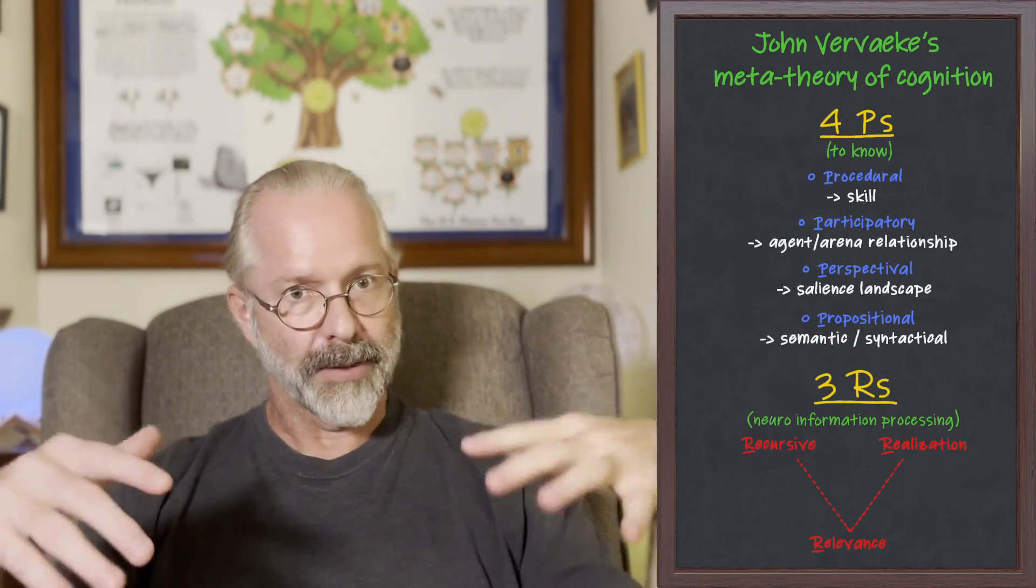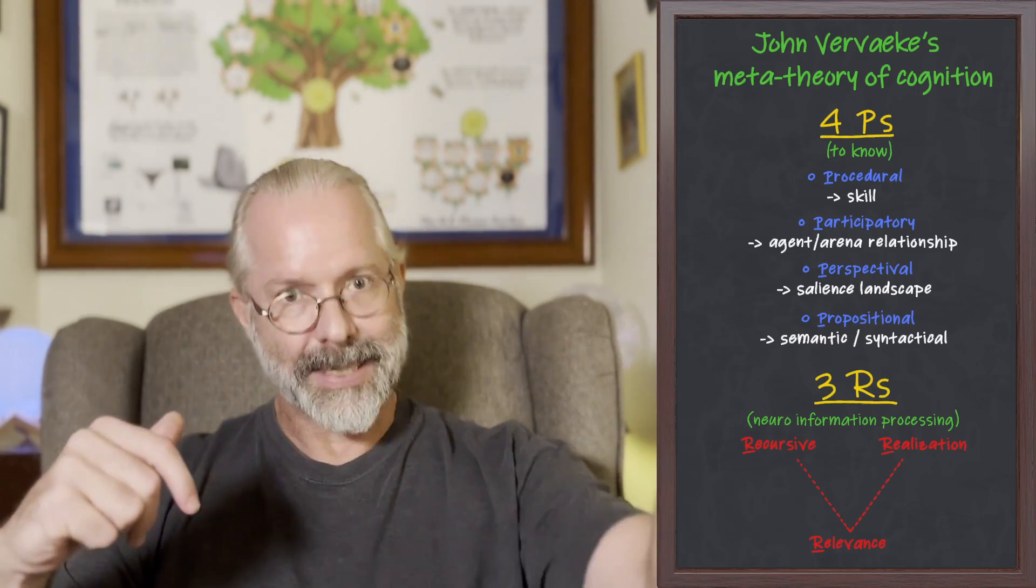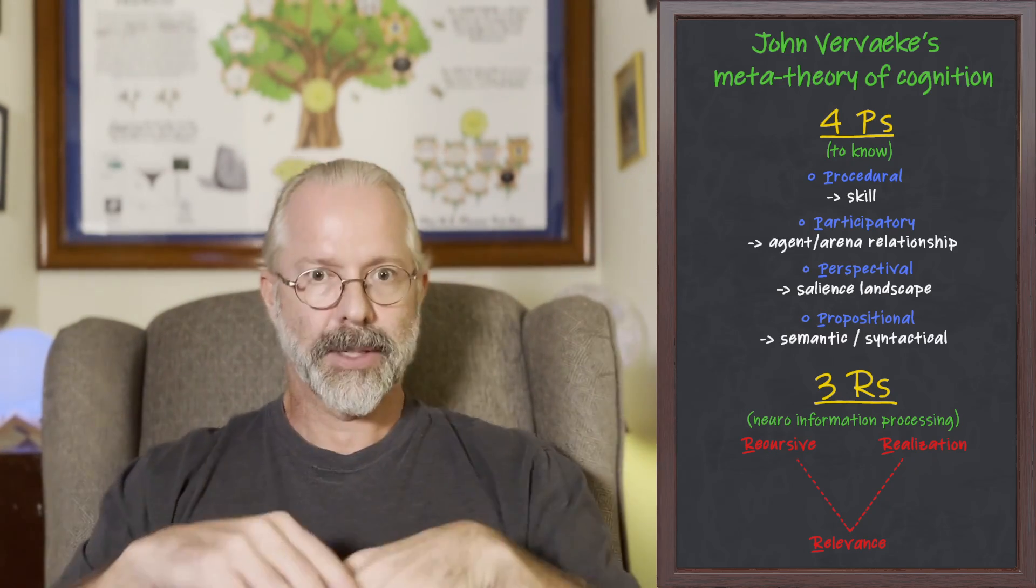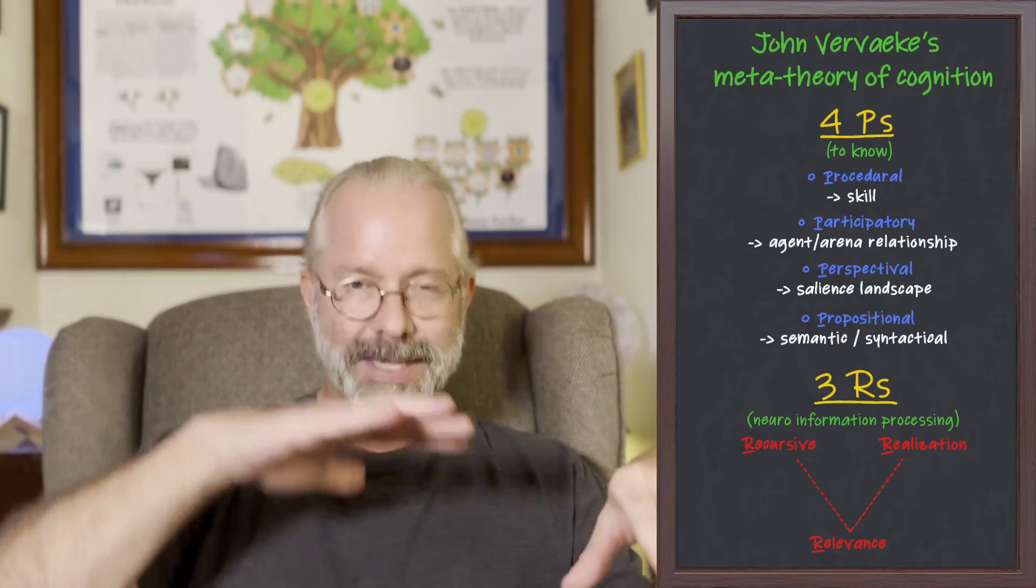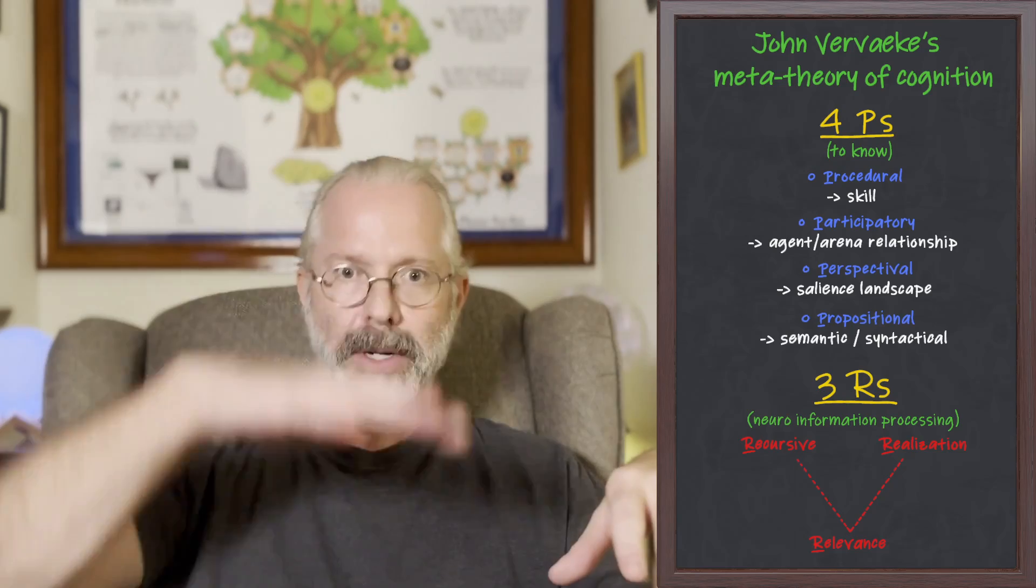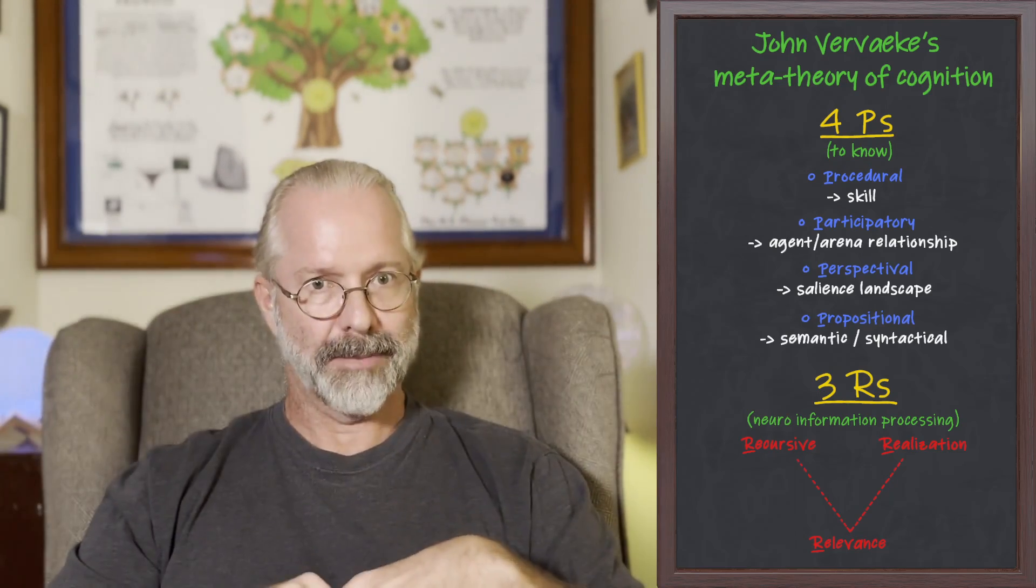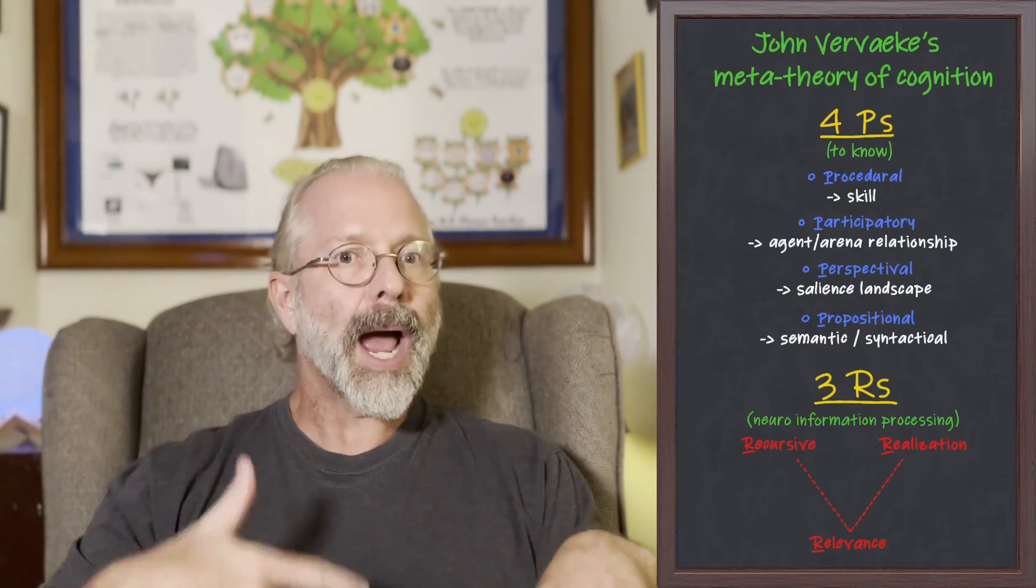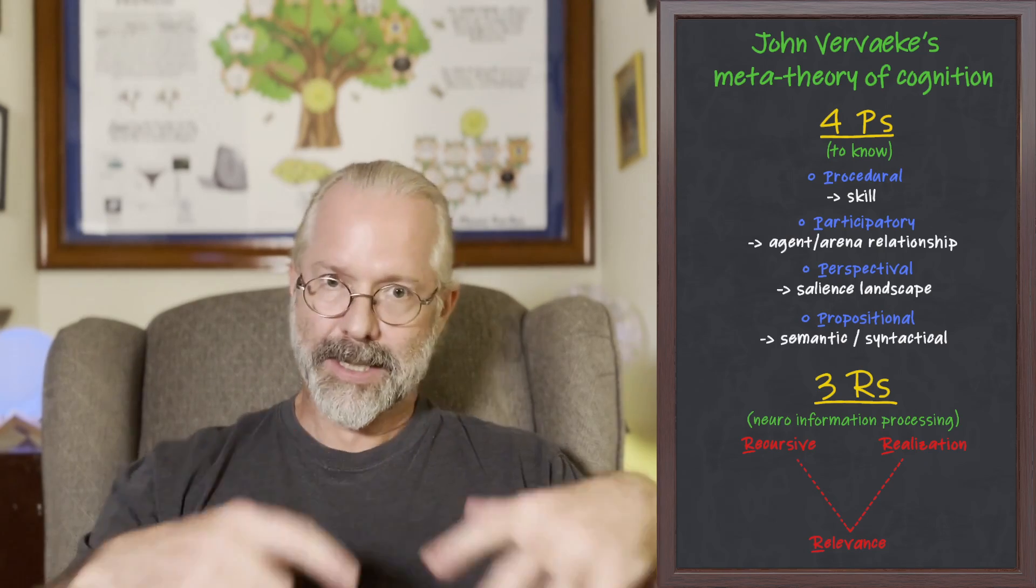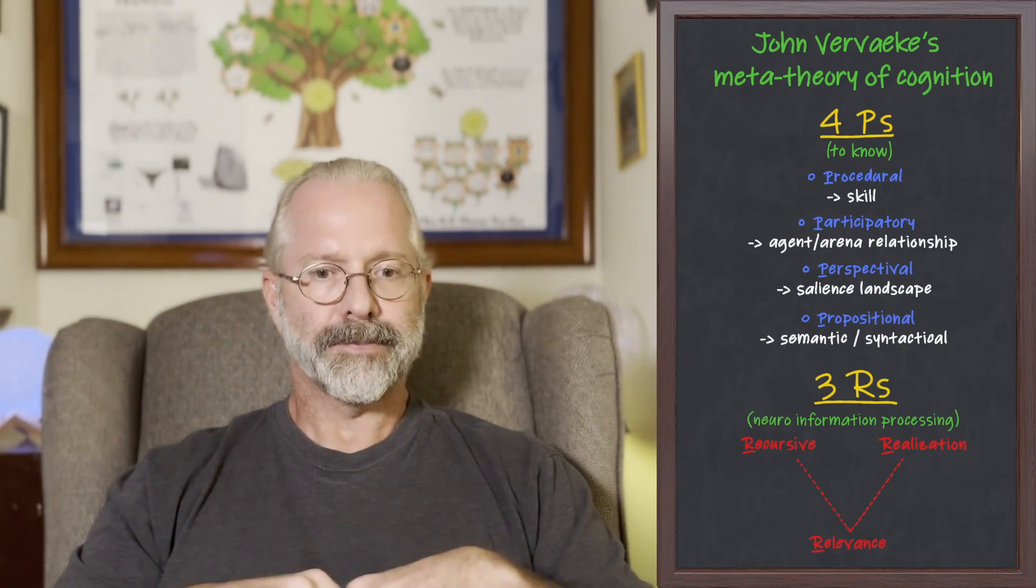In other words, how do you pick out the relevant, and then how do you realize that, i.e. understand it, and then utilize that to construct affordances? Vervaeke adds recursivity to this because he's arguing that this is happening on multiple levels of modeling from very basic processes that get extended and then interrelate between them. So recursive relevance realization is a functional argument for how neuro-information processing affords the capacity of an animal to move about its environment.